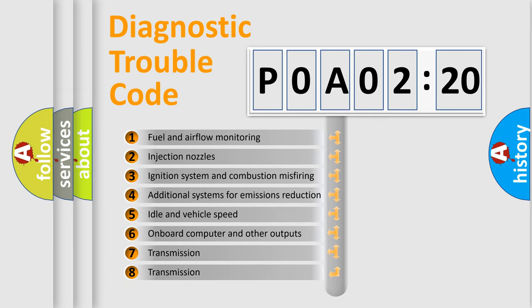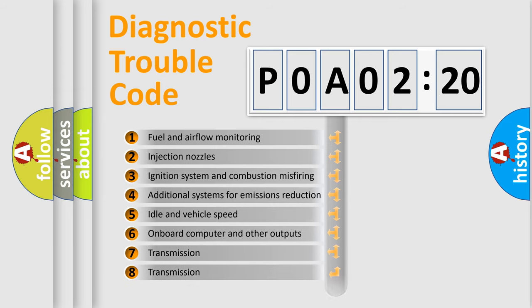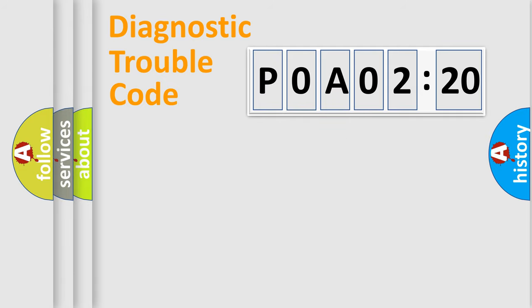The third character specifies a subset of errors. The distribution shown is valid only for the standardized DTC code. Only the last two characters define the specific fault of the group.